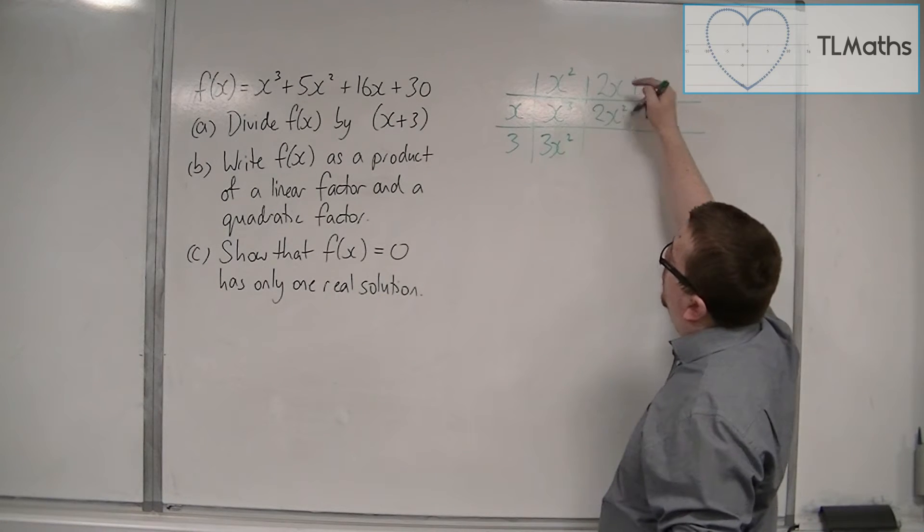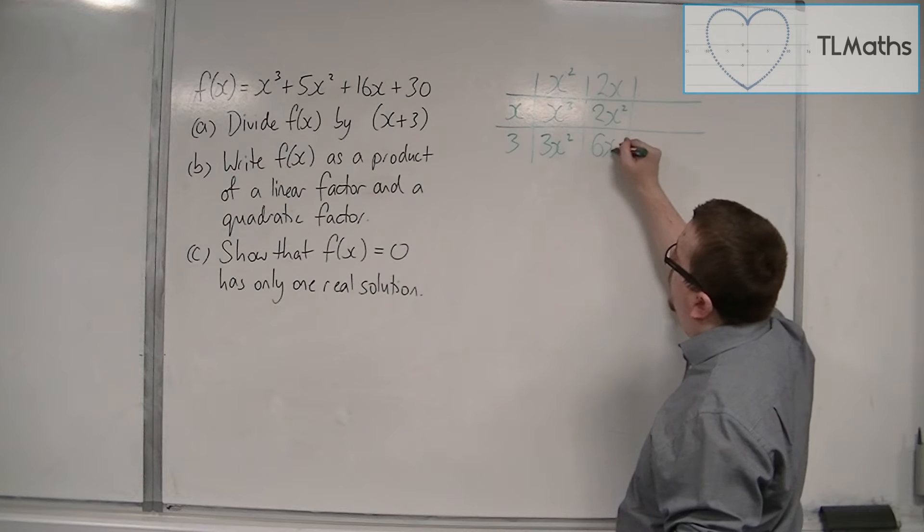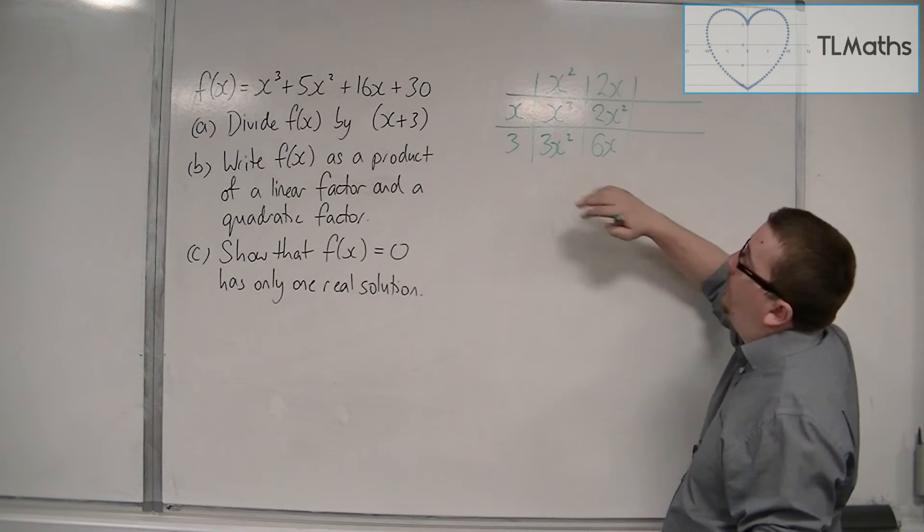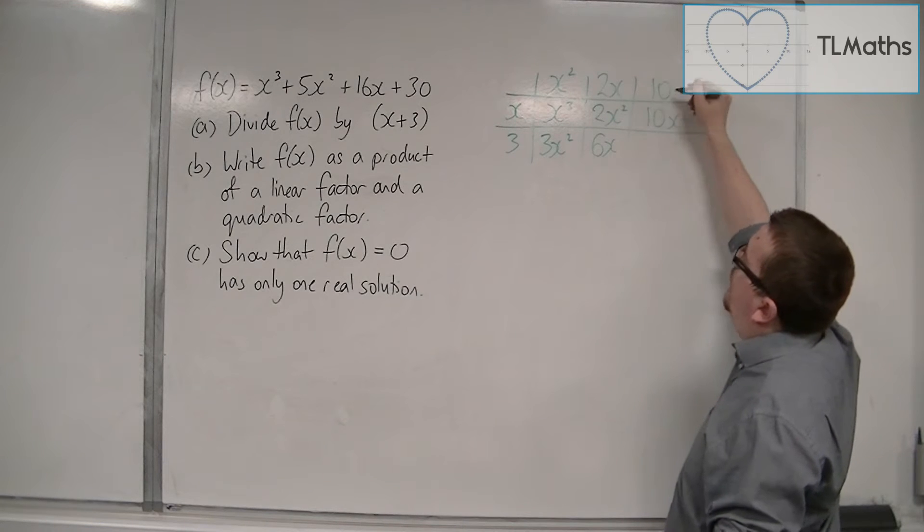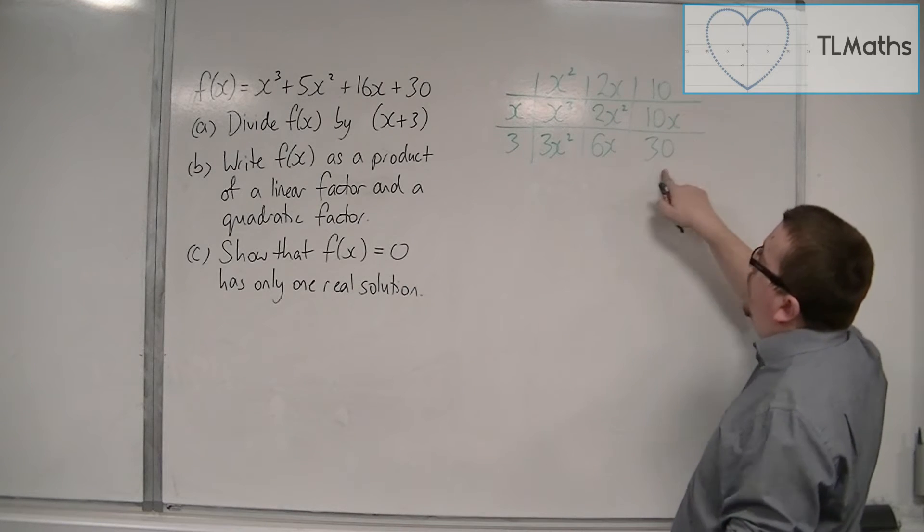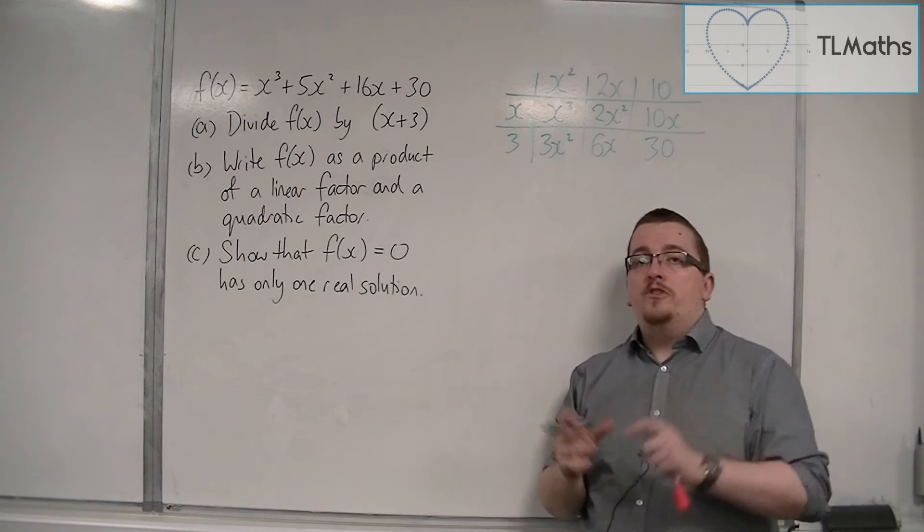x's into that go 2x. 2x times 3 is 6x. I don't want 6x, I want 16x, so I add on 10x. x's into 10x go 10, and 10 times 3 is 30. 30 is what I want, so there is no remainder.